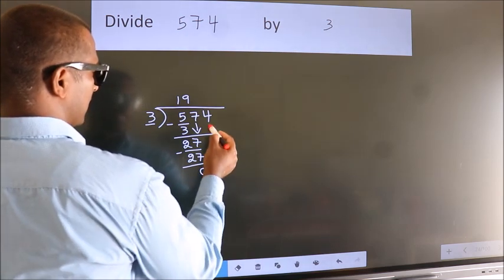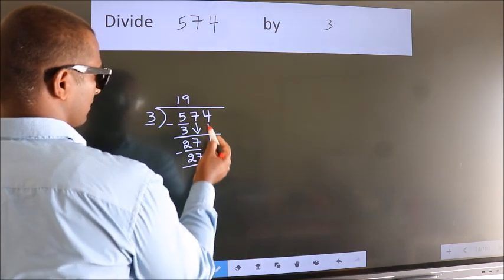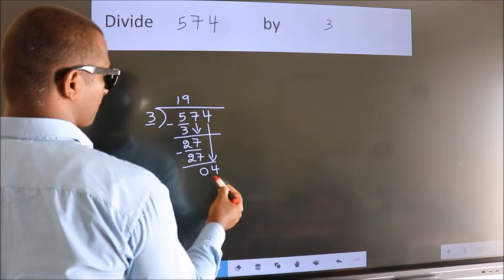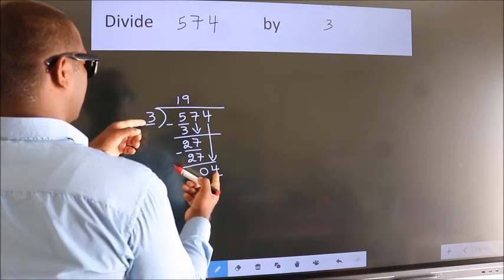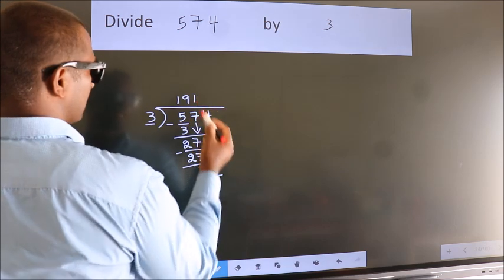After this, bring down the beside number. So, 4 down. So, 4. A number close to 4 in 3 table is 3 times 1 is 3.